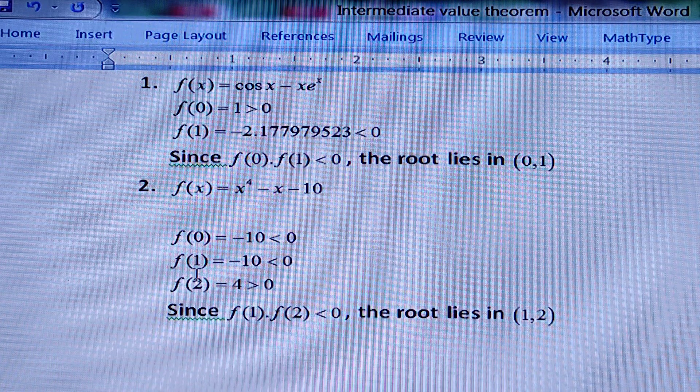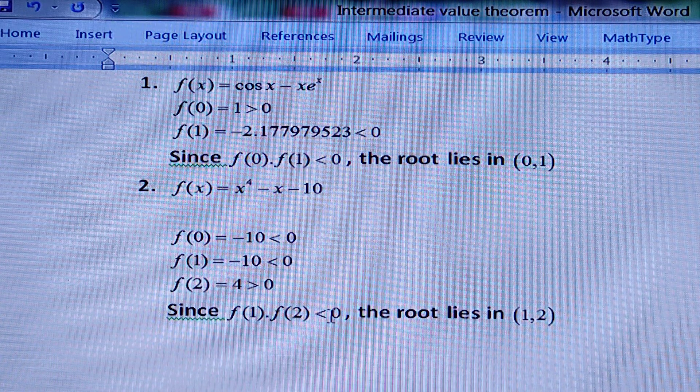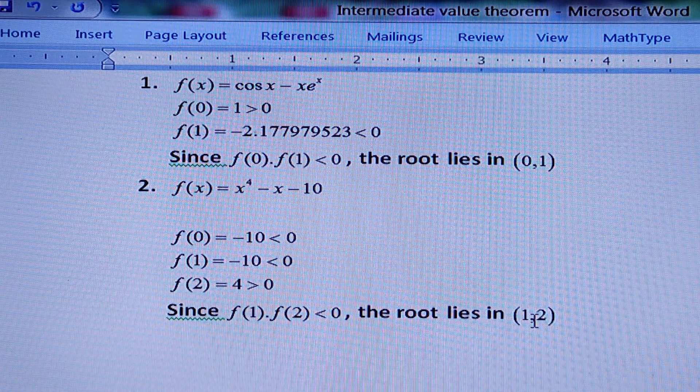That means f(1) is negative, f(2) is positive. So f(1)·f(2) < 0. So according to the Intermediate Value Theorem, the root lies in the open interval (1,2).